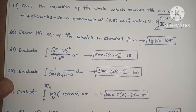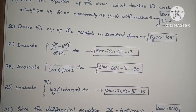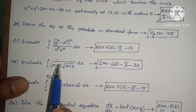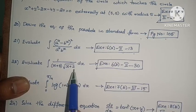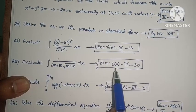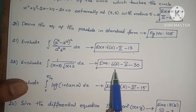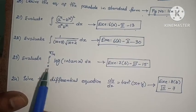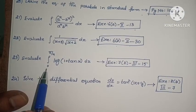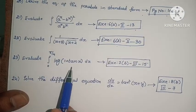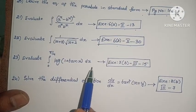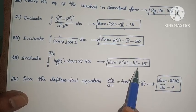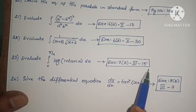This is a small problem — easy marks. Next: evaluate ∫ 1 / [(x + 3)√(x + 2)] dx. This is question 6, second exercise, third problem. Next: evaluate ∫₀^(π/4) log(1 + tan x) dx. This is question 7, third exercise, third problem — 15th one.